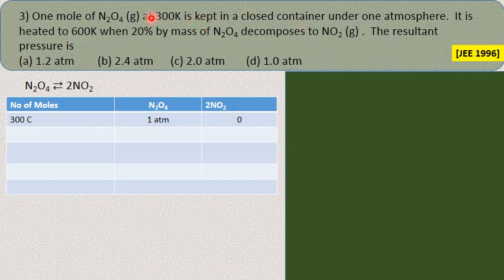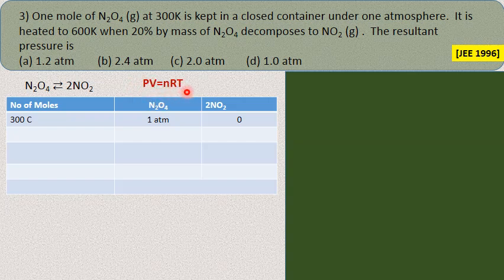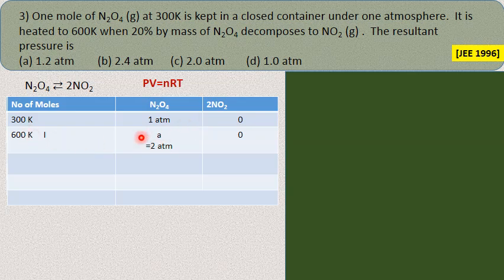Since it is a closed container, the number of moles (N), volume (V), and gas constant (R) all remain constant. Therefore P is proportional to T. At T1 = 300 K, P1 = 1 atm. When temperature doubles to 600 K, pressure also doubles to P2 = 2 atm. This 2 atm is the initial pressure of N2O4 when the reaction begins at 600 K.